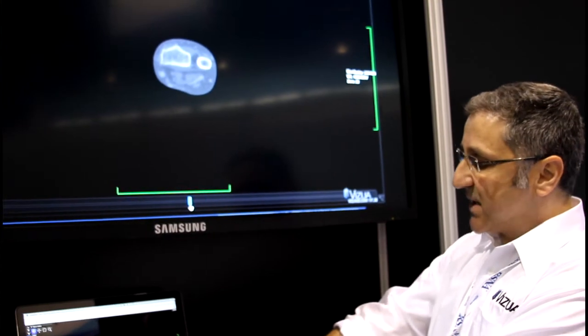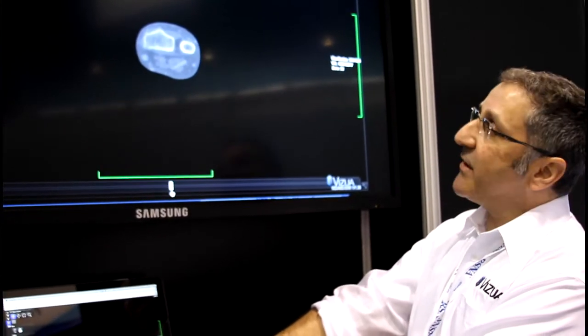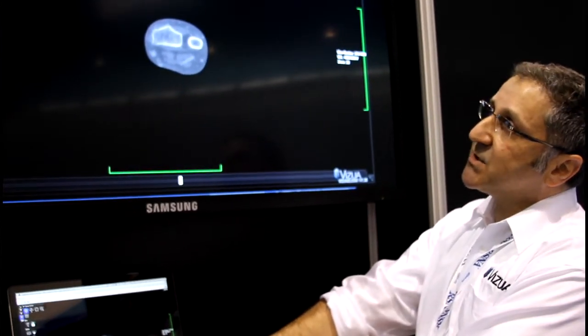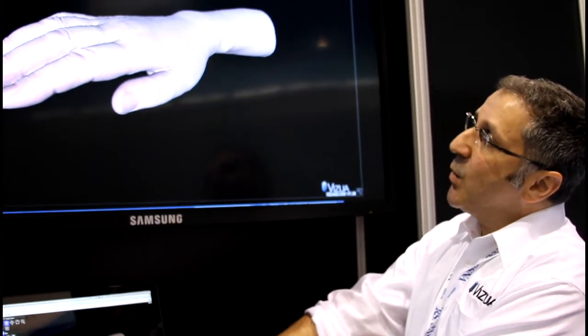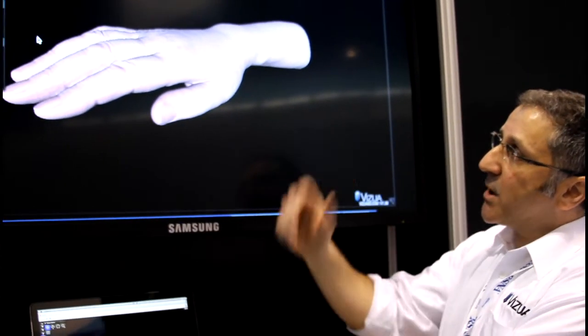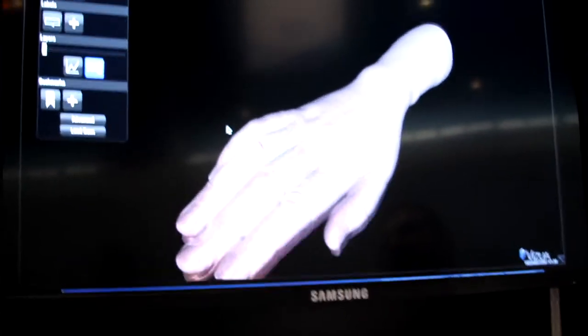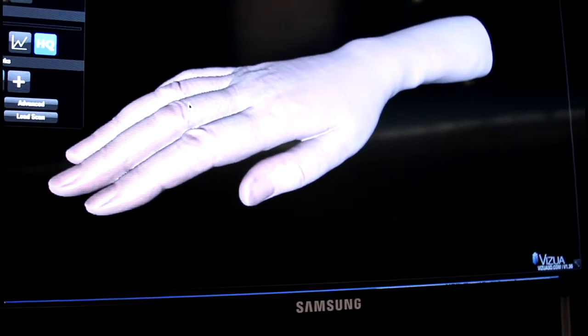This is a patient that presented with a swelling on their forearm. This is the 2D CT scan they got, just a regular one. When our system takes that data, we create a real-time 3D reconstruction, high speed, high quality.